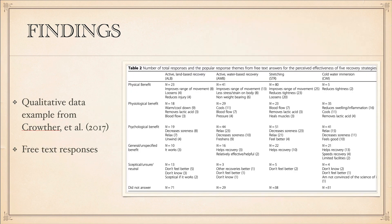An example of the qualitative findings involved looking at comments and their frequency across different treatment techniques. When they looked at people who utilized active land-based recovery techniques like walking, the physical benefits reported in the open-ended questions included things like improves range of motion, loosens joints or extremities, and reduces injury. These comments convey useful information about what athletes felt those techniques did for them and the reasons they chose to use them.